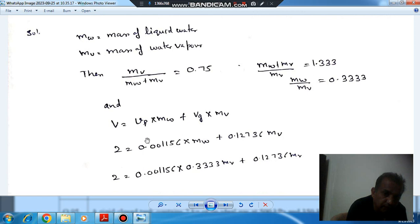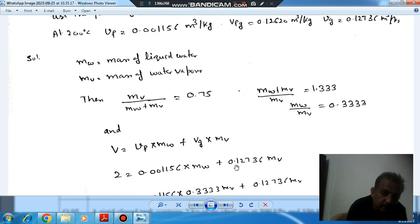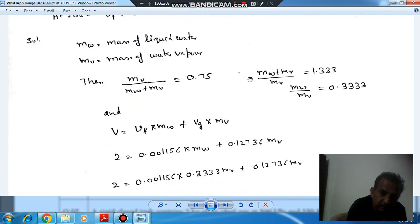So this is 2 equals 0.001156 times mw, and vg is 0.12736 into mass of the vapor phase. So this is the volume of the vapor phase, this is the volume of the liquid phase.